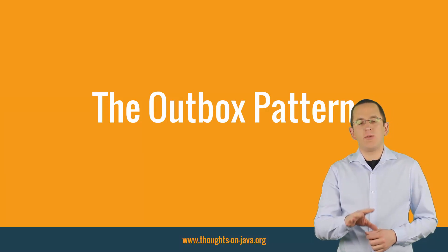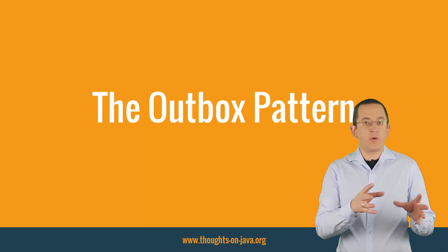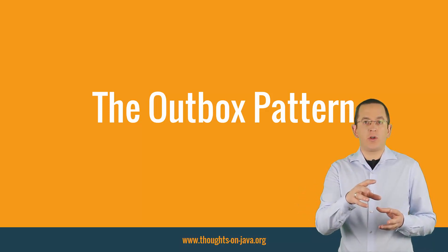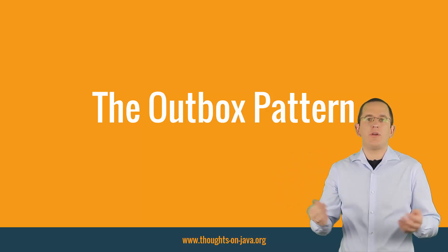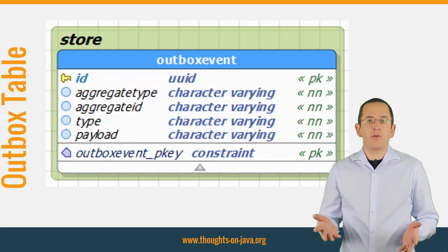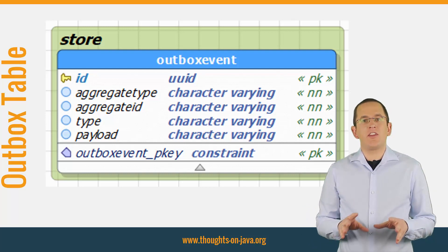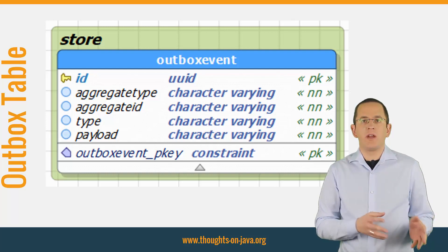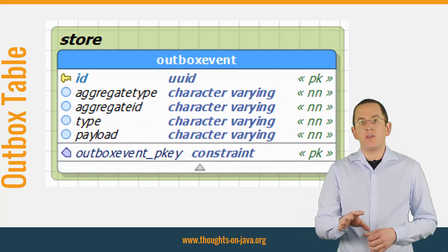I already explained the Outbox pattern in great detail on my blog and a previous video, so let's keep this section short. The general idea is simple. Similar to an Outbox used in a paper-based office, you add an Outbox table to the database of your microservice. The service writes all the messages it wants to send to the message broker into this table. A MessageRelay service then collects these messages and sends them to the message broker, for example Apache Kafka. The Type, AggregateType, and AggregateID columns provide metadata information about the event or message — useful for processing or filtering events. The Payload column contains the information sent to the broker, which can be specific event information or the current state of the Aggregate. I prefer to send the current state of the Aggregate, as it doesn't share internal details of the microservice and gives consuming services all the information they might need.